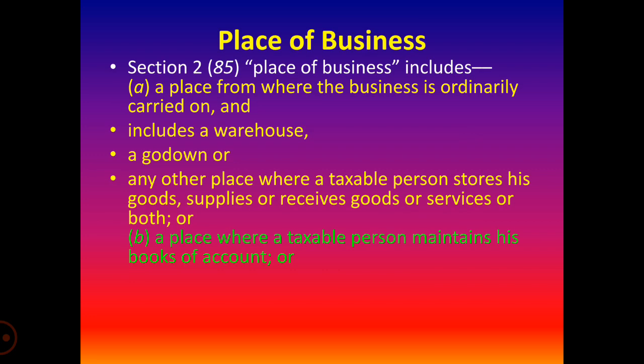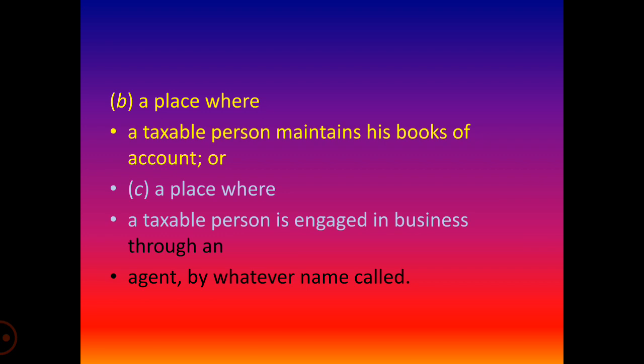Place of business also includes a place where the taxable person maintains his technical resources and human resources — persons employed — so that he can supply or receive services in the ordinary course of business or in the furtherance of business. Sub-clause (c): Place of business includes a place where a taxable person is engaged in business through an agent.